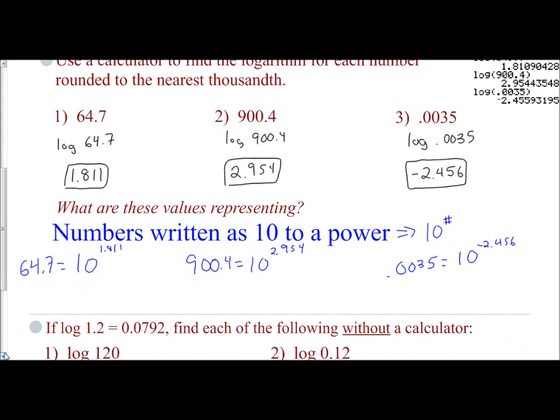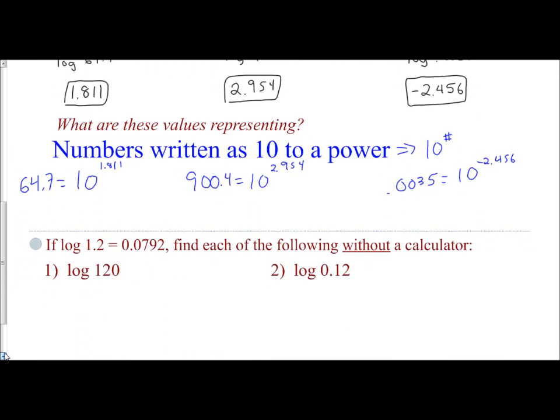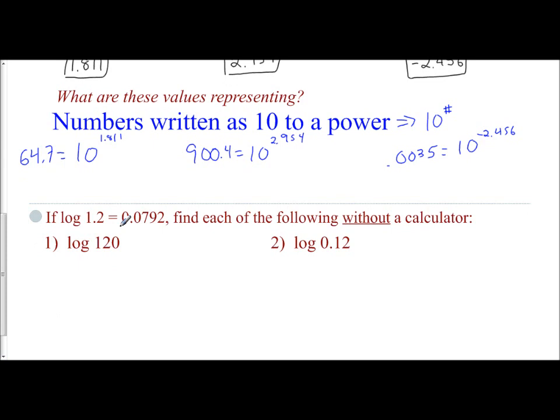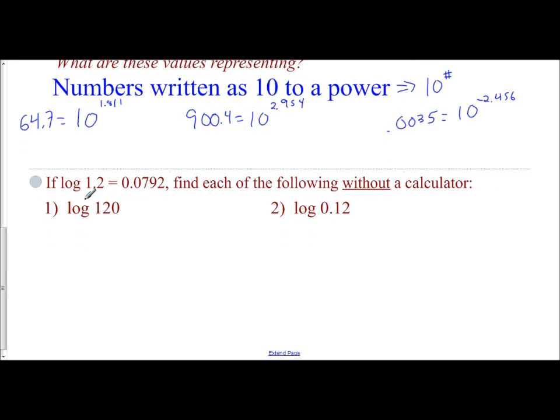Let's look at a couple other concepts. If log of 1.2 is equivalent to 0.0792, I want to find the values of the following without a calculator. This is tricky. What this means is we need to find a way to write 120 using 1.2. What do I notice right away? I have 1.2 and I have 120. How do I make them equivalent? How do I make them so you can write one as the other?